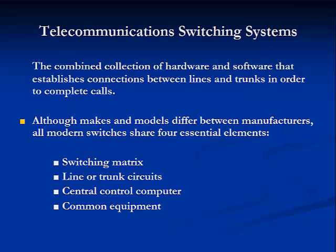First, the switching matrix, or the internal connections between incoming and outgoing lines or circuits. A switching matrix could also be called a switching fabric. Second, line or trunk circuits are the means of connecting to local lines or other trunk lines. Line circuits may be either digital or analog depending upon the line being connected.